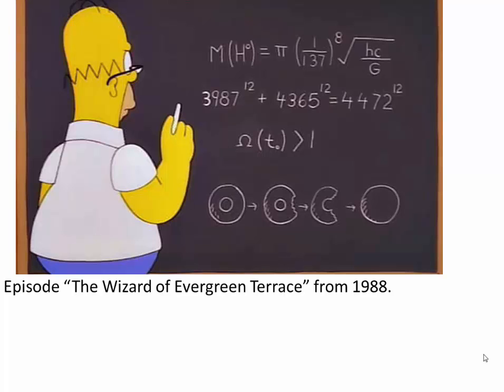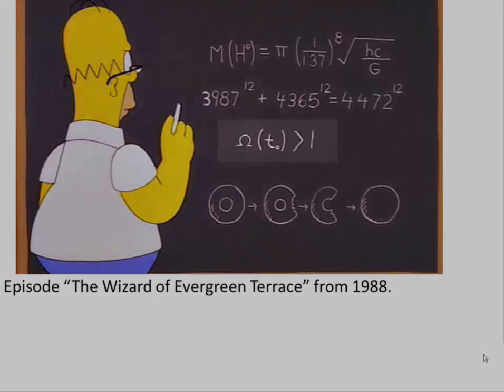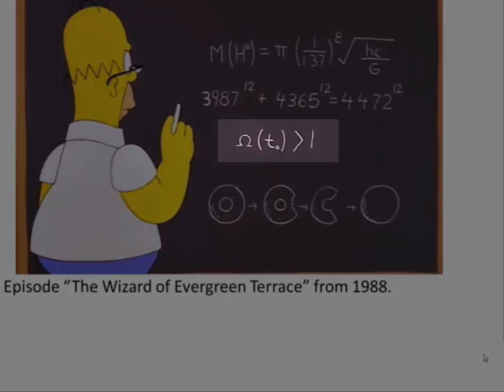Simpson is a genius. He has solved four of the world's unknown problems in one sitting. Here I'll show you what they are. The third one is talking about the density of the universe, which basically gives us the chance to predict what is the fate of the universe.